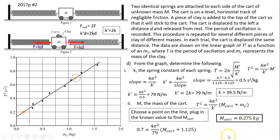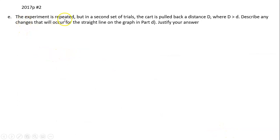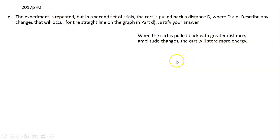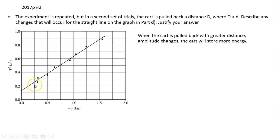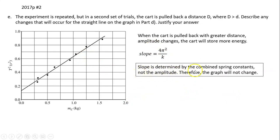Last part: the experiment is repeated but the card is pulled back a larger distance capital D, where D is greater than lowercase d. Describe any change to the straight line on the graph. Pulling back further gives the system greater energy and changes the amplitude. However, the slope of the graph equals 4π²/k', which depends only on the combined spring constant — not the amplitude. Therefore the slope and the graph remain unchanged.